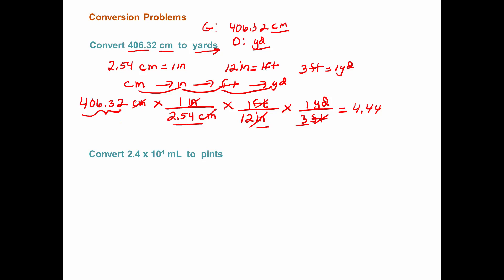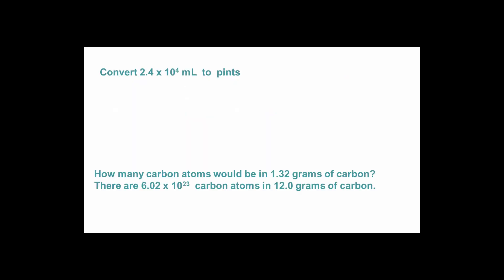In this second problem, we're asked to convert 2.4 times 10 to the 4 milliliters to pints. So we need to, let's do our roadmap here. We're going from milliliters to pints. So I basically just have to go with what I can remember as far as equivalences. I know I can convert milliliters to liters, and I can convert liters to gallons, and I can then convert gallons to quarts, and then quarts to pints. Again, I'm sorry about this pen. I'm really having a problem with it today.